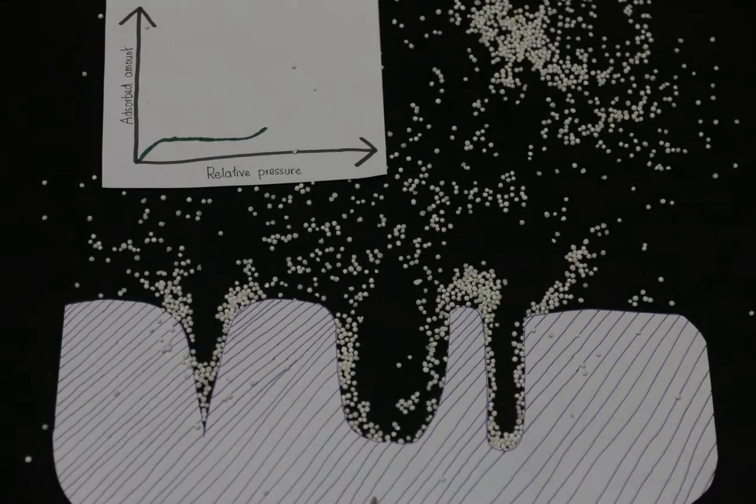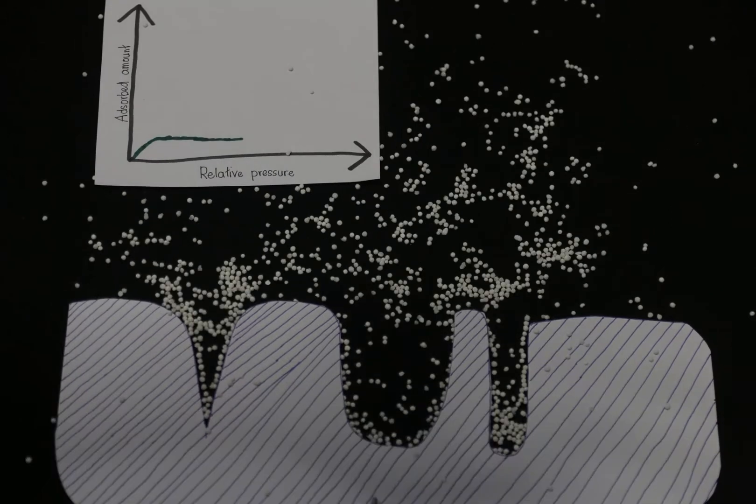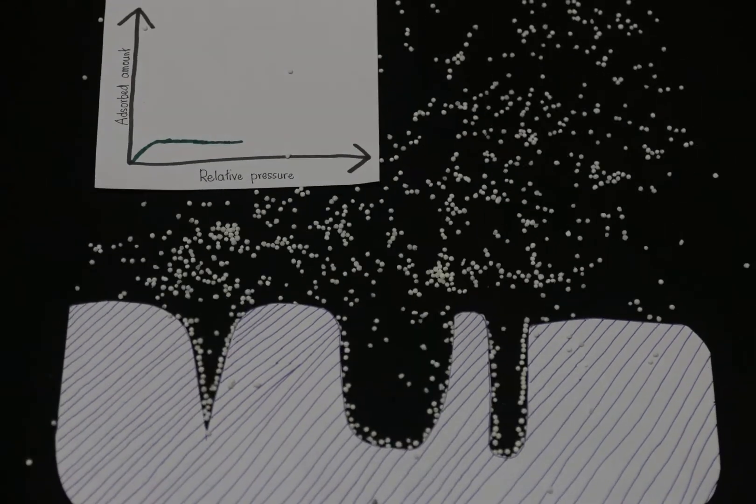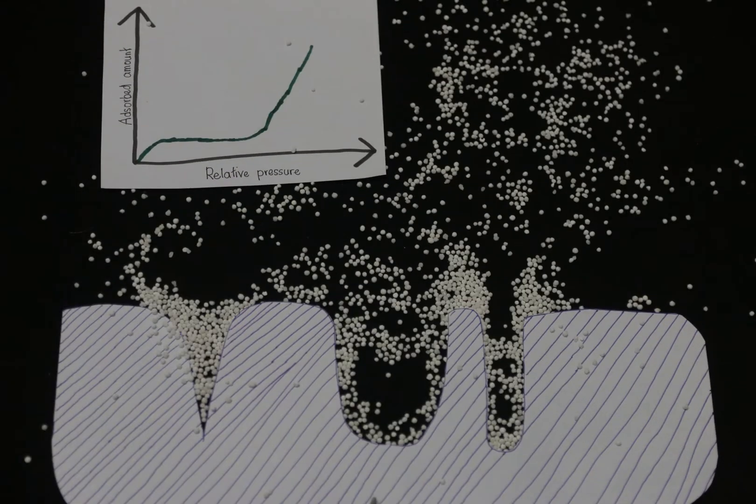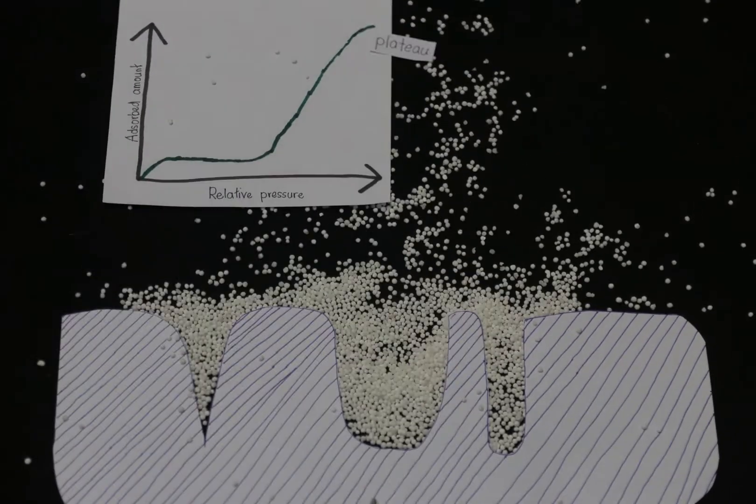Additional molecules are then adsorbed as the sorption process moves through multilayer formation. As the pressure of gas is further increased, we see the beginning of mesopore filling, often referred to as capillary condensation. Note the rise in the isotherm.